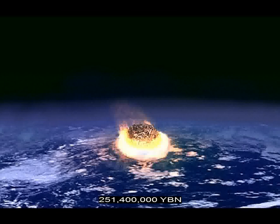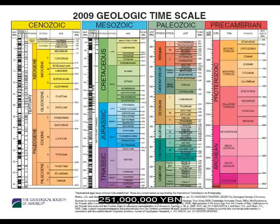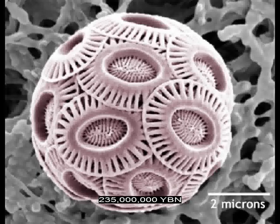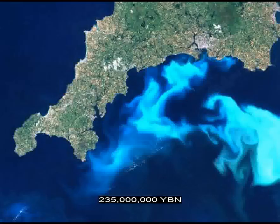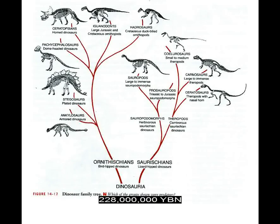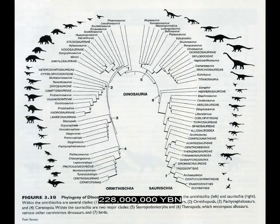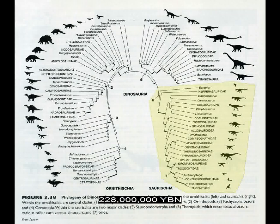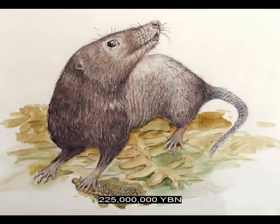The largest mass extinction in history — the end-Permian mass extinction — 82% of all genera go extinct. The end of the Paleozoic and start of the Mesozoic era, and the end of the Permian and start of the Triassic period. The supercontinent Pangea forms. The protist phylum Haptophyta evolves — the coccolithophores. The reptiles dinosaurs evolve. Dinosaurs divide into two major lines — the Ornithischia, bird-hipped dinosaurs, and the Saurischia, lizard-hipped dinosaurs. The saurischian dinosaurs split into the Sauropodomorpha and the Theropoda. The theropod dinosaurs are bipedal and carnivorous, including Allosaurus, Tyrannosaurus, and Velociraptor. All birds descend from a theropod ancestor.